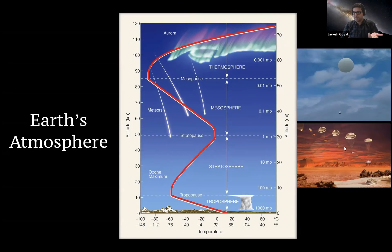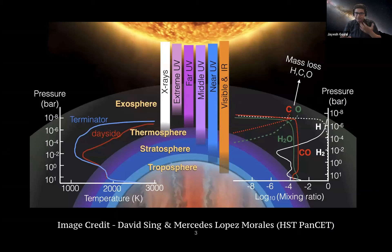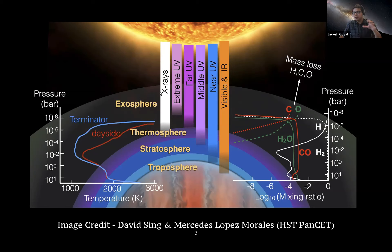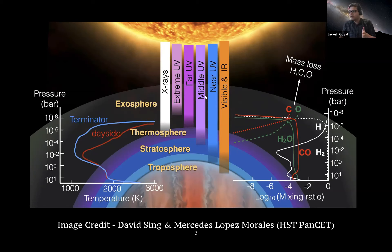But how do we do this for exoplanets? To understand exoplanet atmospheres, we need their pressure-temperature structure, which is very difficult to obtain. As in any field of astronomy, we rely on electromagnetic radiation. This figure shows how different wavelengths probe different atmospheric levels — extreme UV and X-rays probe the thermosphere and exosphere, while longer wavelengths like mid-UV and visible penetrate deeper.